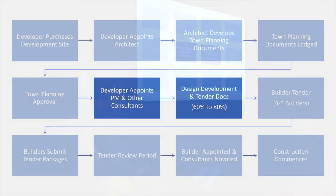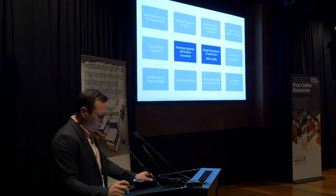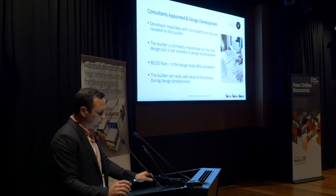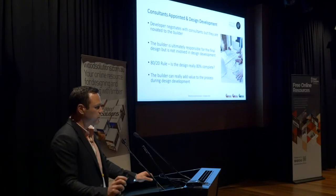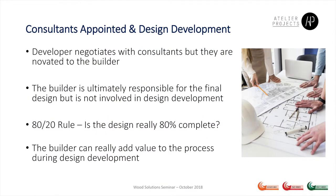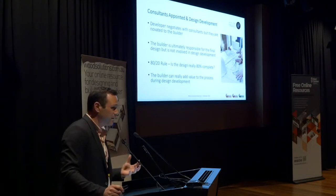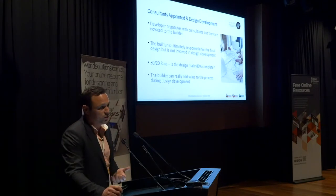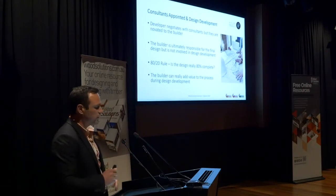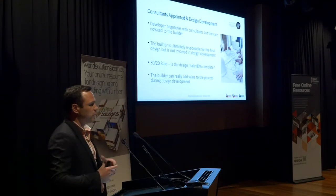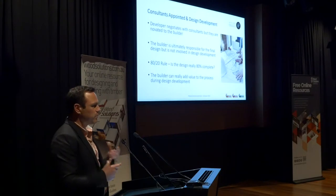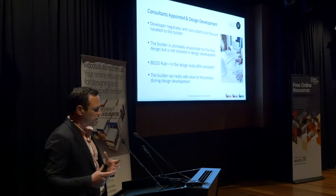Moving into the next section: the appointment of a project manager and consultants over and above the architect, and the development of design and tender documents. It's really important to note who negotiates the deal with the consultants and who is actually responsible for the design during construction. The developer appoints consultants, a scope and price is determined, and then they get novated across to the builder after the tender process. There's often a lot of discussion around that novation document — is it really 80% complete? Is there enough money to finish the design? What VM options have been identified? Is redesign required? This contractual complexity extends beyond the head contractor to the arrangement with the consultants, and it becomes really messy because the design does shift during this process.